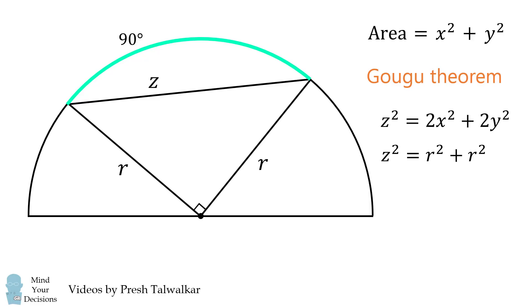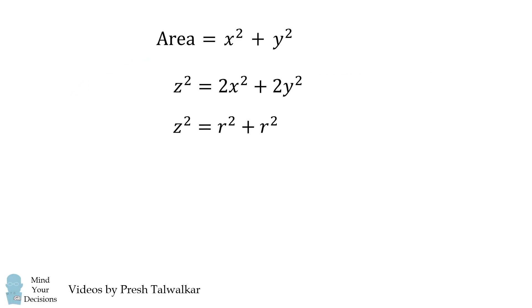We now have two equations which we'll simplify. The second equation simplifies to be 2r squared. And since both equations are equal to z squared, we set them equal to each other. We then divide by 2 to get x squared plus y squared is equal to r squared.